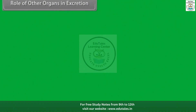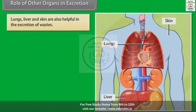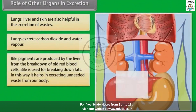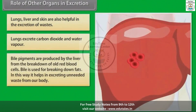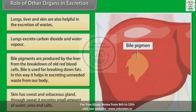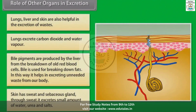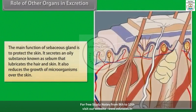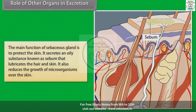Role of other organs in excretion. Lungs, liver and skin are also helpful in the excretion of wastes. Lungs excrete carbon dioxide and water vapour. Bile pigments are produced by the liver from the breakdown of old red blood cells; bile is used for breaking down fats, and in this way it helps in excreting unneeded waste from the body. Skin has sweat and sebaceous glands. Through sweat, it excretes small amounts of water, urea and salts. The main function of the sebaceous gland is to protect the skin — it secretes an oily substance known as sebum, lubricates the hair and skin, and reduces the growth of microorganisms over the skin.